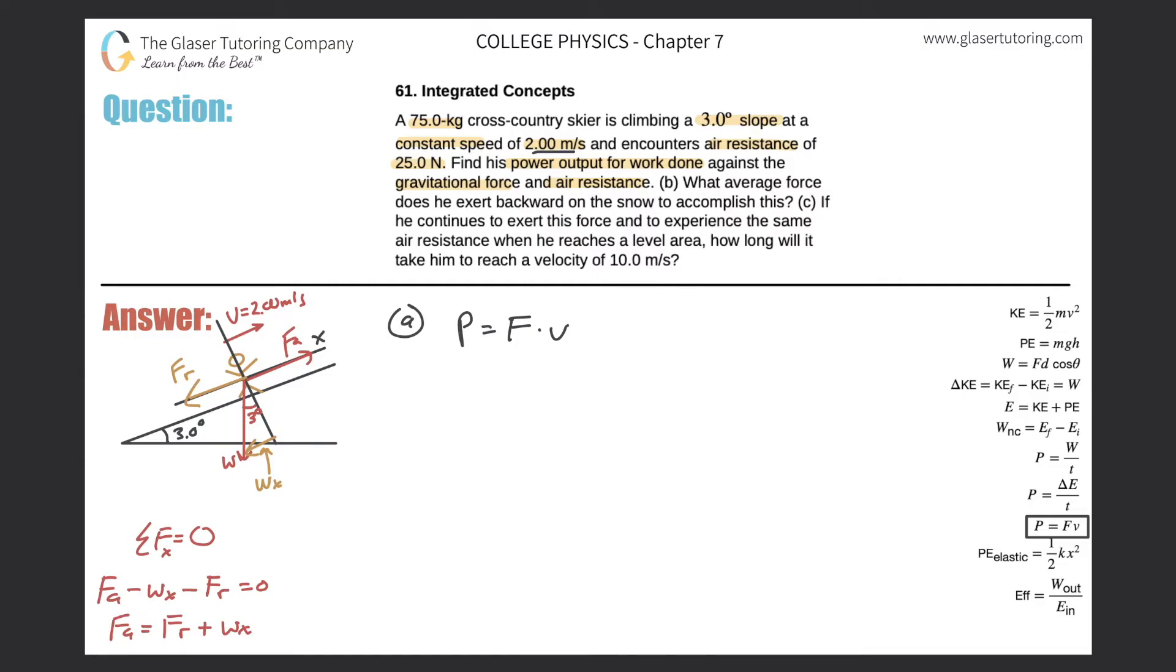But another way to think about it is this triangle right here has a right angle right there. Okay, this is three degrees. Therefore, this angle would be 90 minus three, or aka 87. 87.